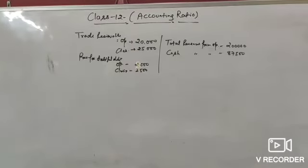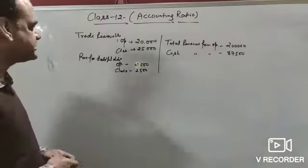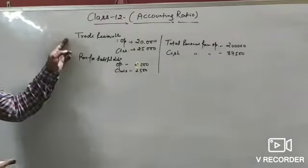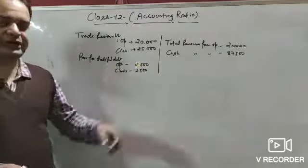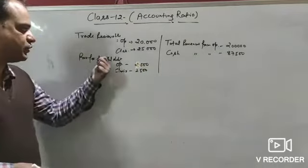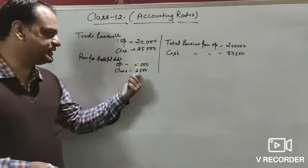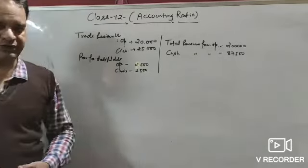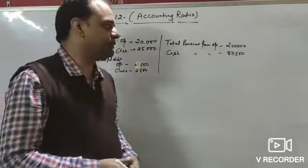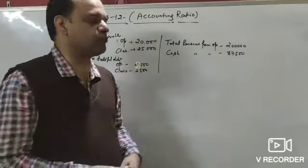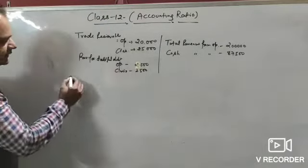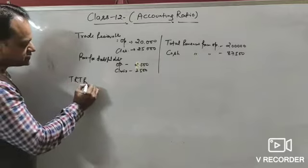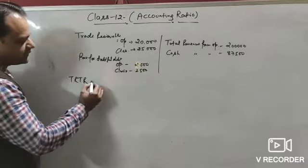Now let's take illustration number 81. In this illustration, trade receivable opening ₹20,000, closing ₹25,000; provision for doubtful debts opening ₹2,000, closing ₹2,500; total revenue from operation ₹2,00,000 and cash revenue from operation ₹87,500. We have to find the trade receivable turnover ratio.